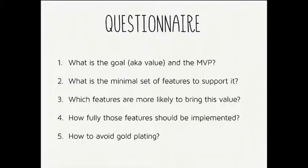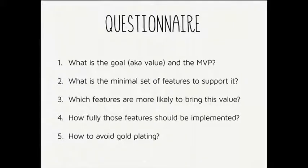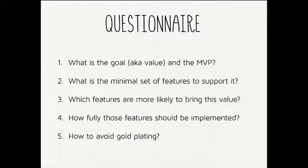The second question is: what is the minimal set of features to support that? A minimal valuable product plus a business goal is a good start, but we also need to understand what features we want to deliver and how they connect with this goal. We need to recreate backlogs according to value, not the other way around. Then we need to answer three remaining questions: which features are most likely to bring this value? Remember, only 7% of features will be mostly useful, so we need to prioritize drastically and deliver only a small fraction of functionality.